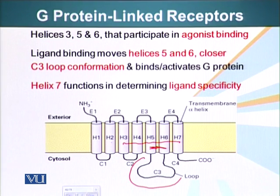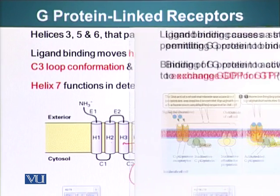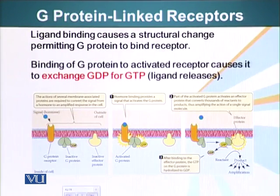Helix 7, H7, basically determines the ligand specificity - which ligand is able to bind this receptor or not. Once the ligand has bound to this receptor, it causes that conformational change we just saw.